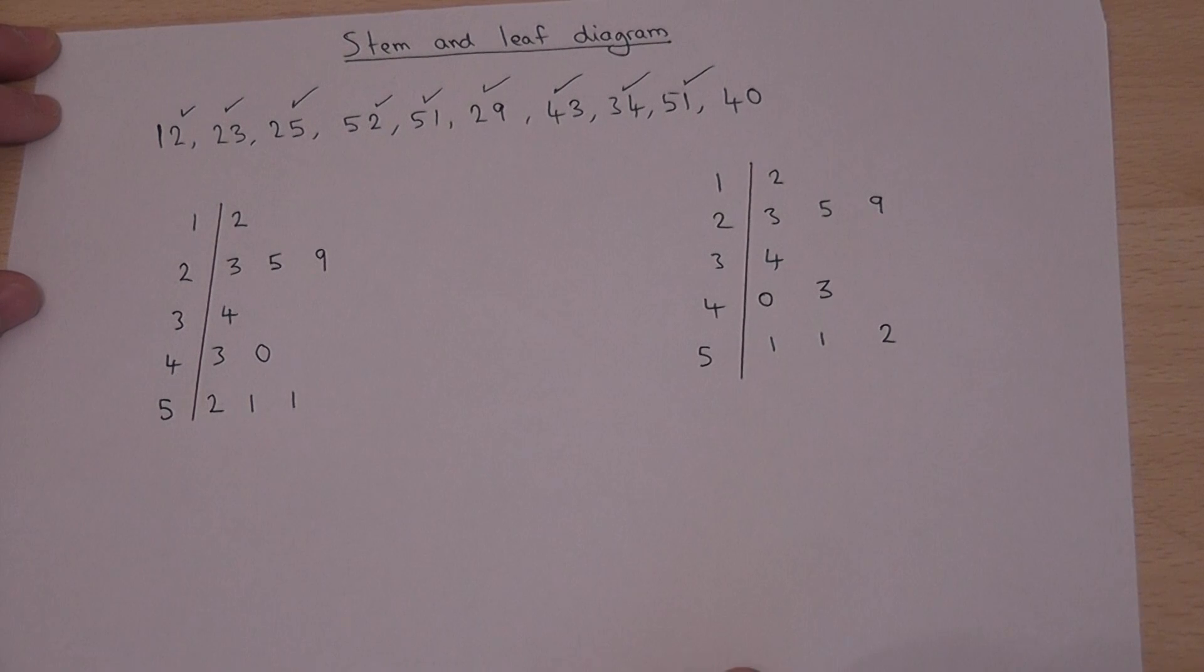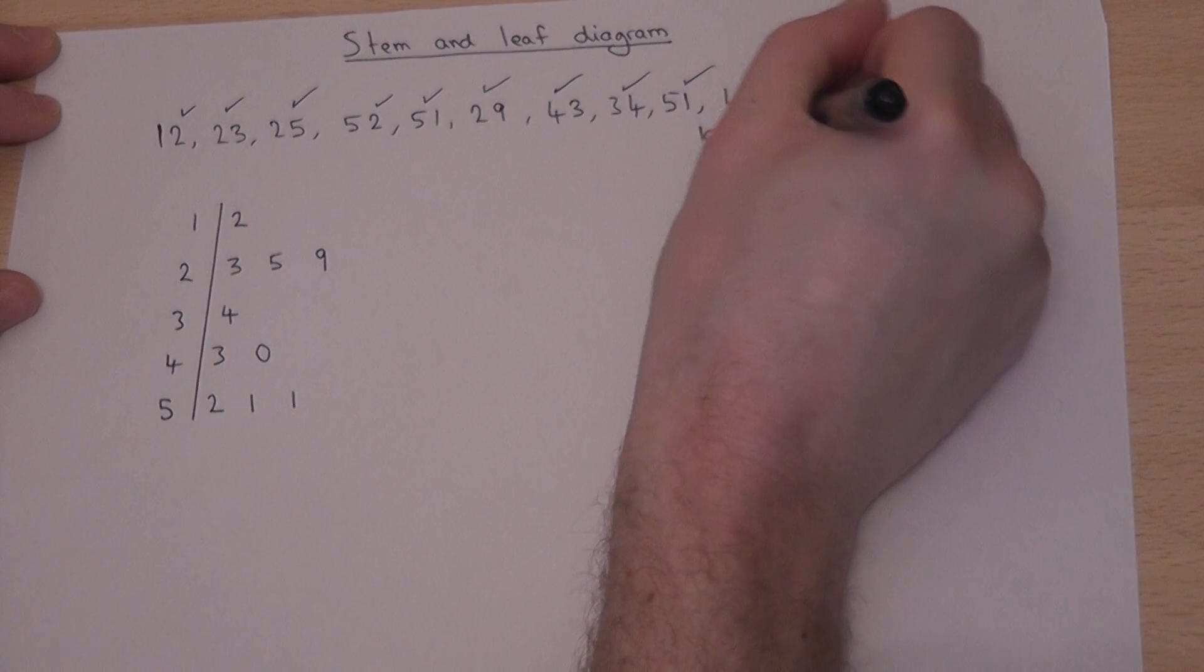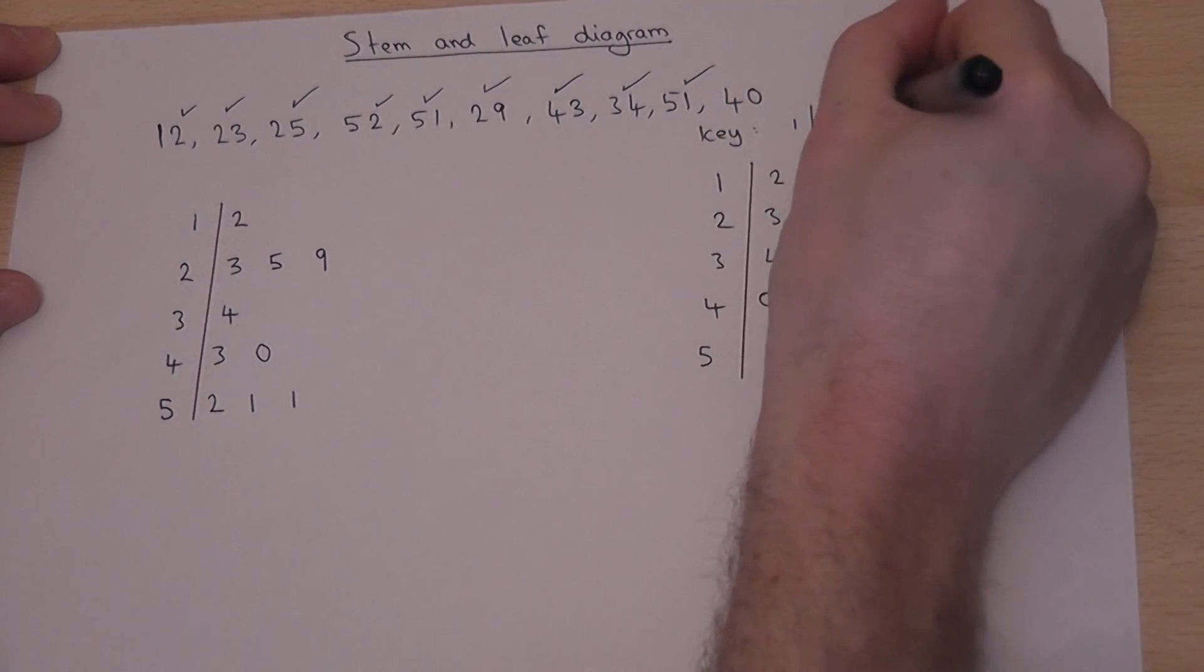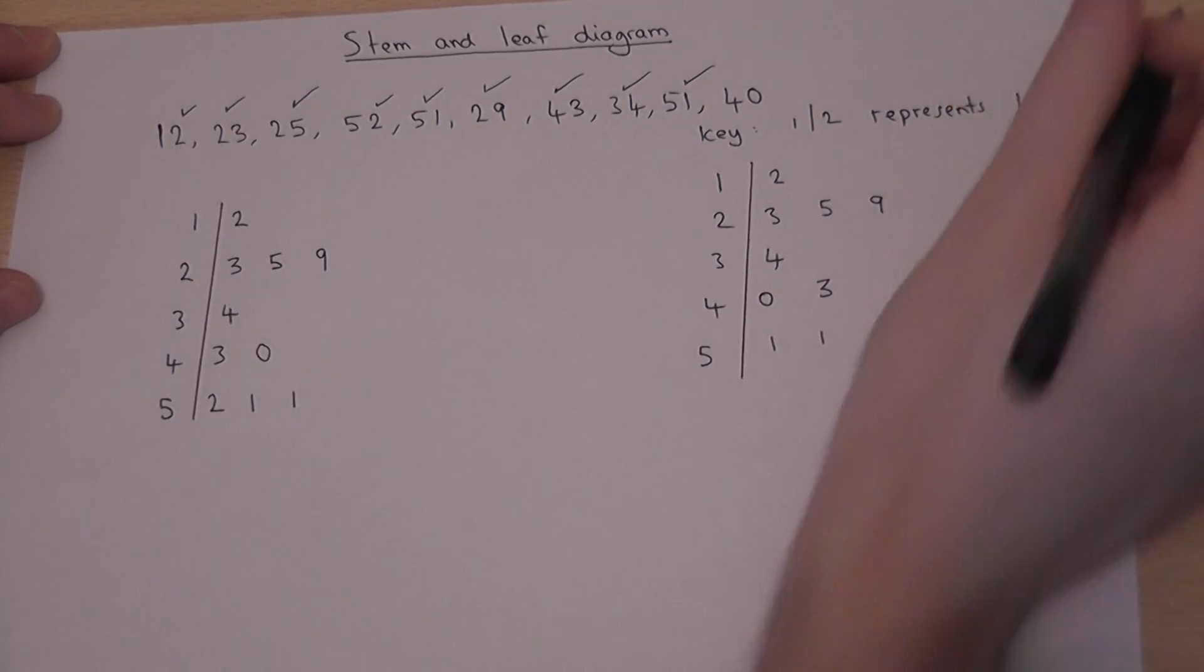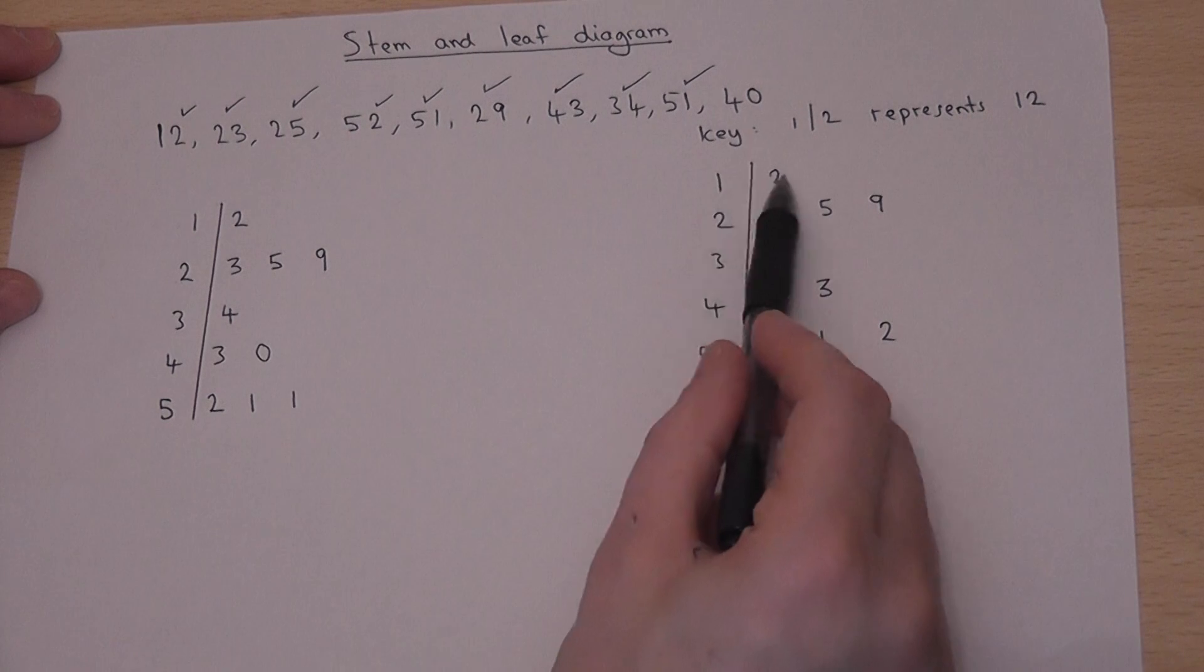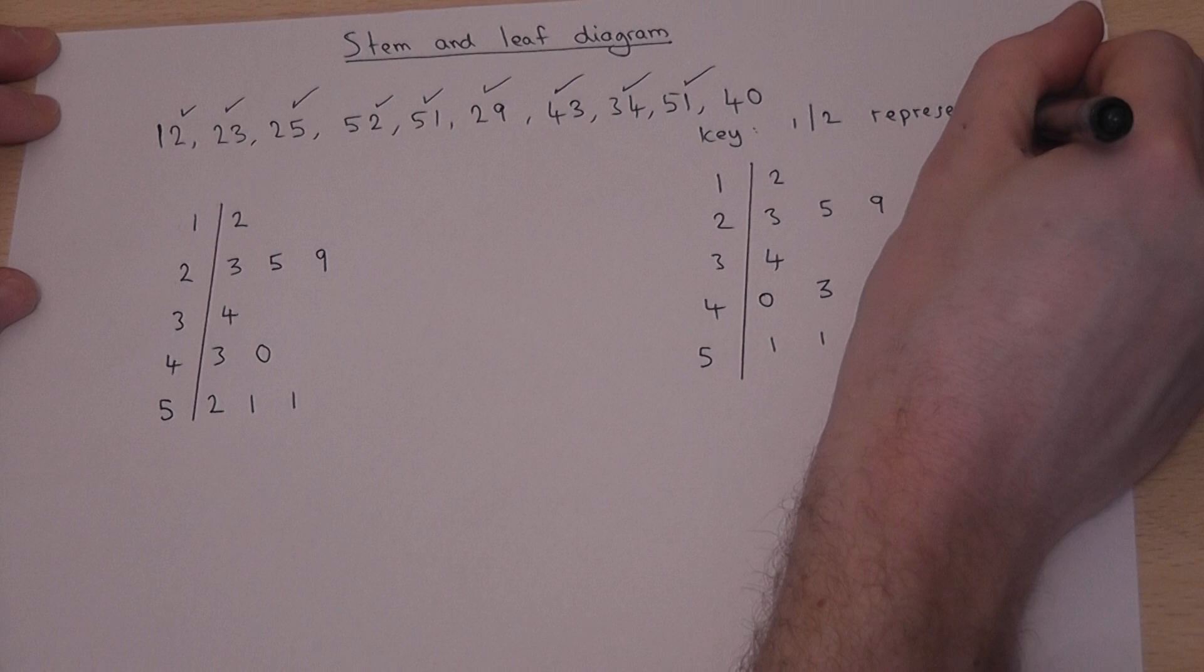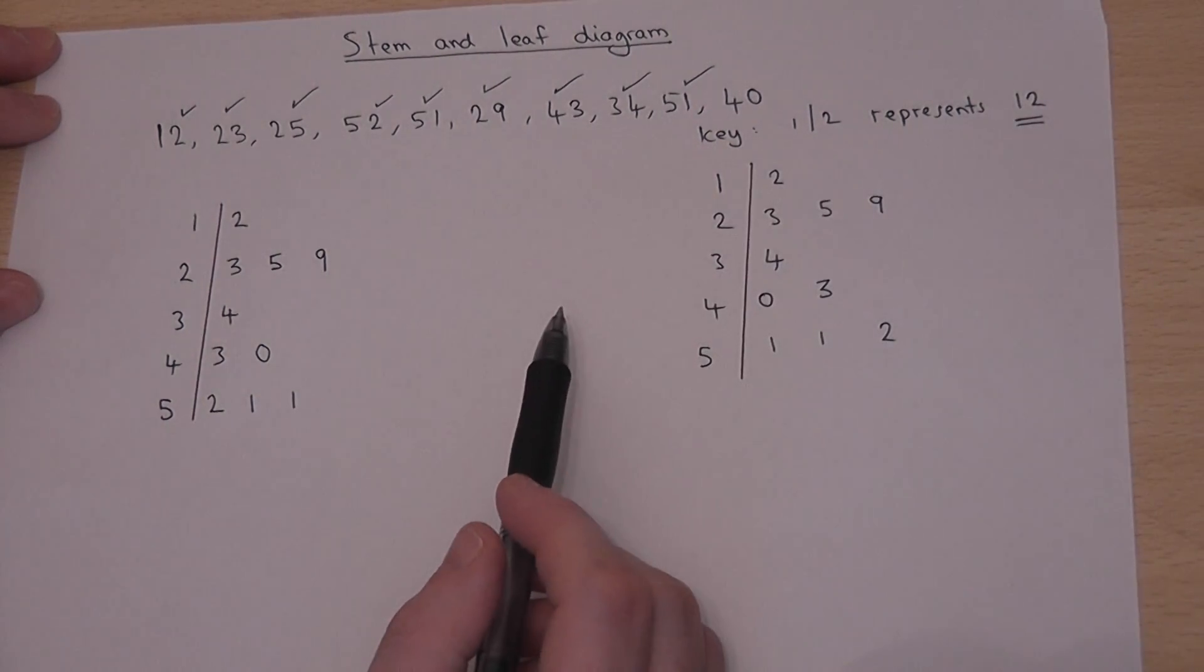Now what we're then missing is a key to show what the numbers mean. So for example I'd write down 1-2 represents 12. This is important because it could represent 1.2 or 2.3 or 2.5. So the key defines exactly what scale the numbers are which we are using.